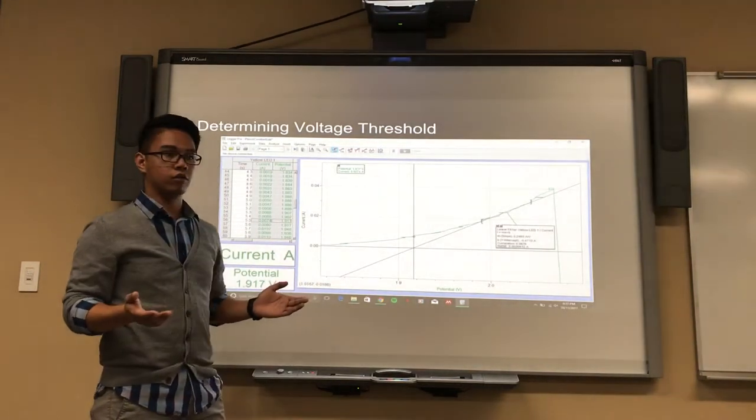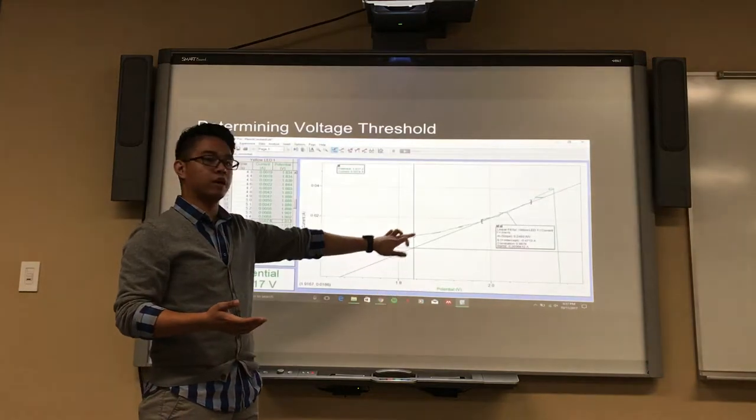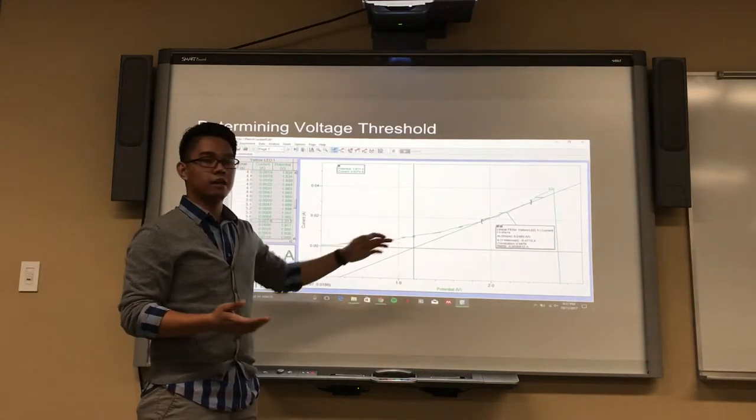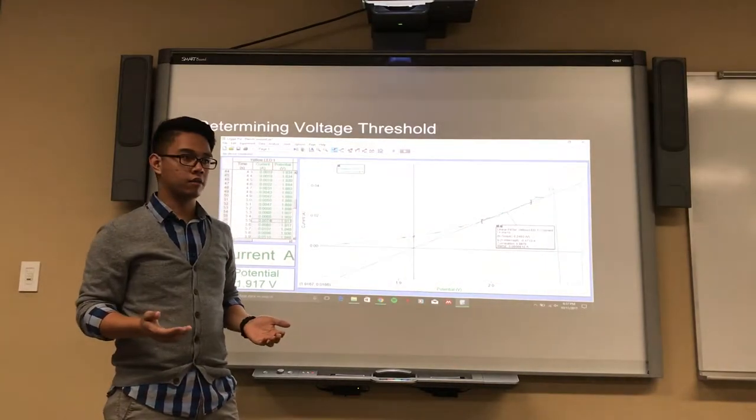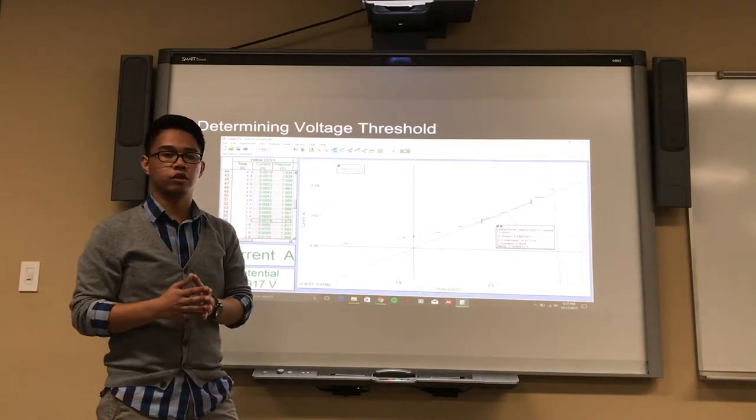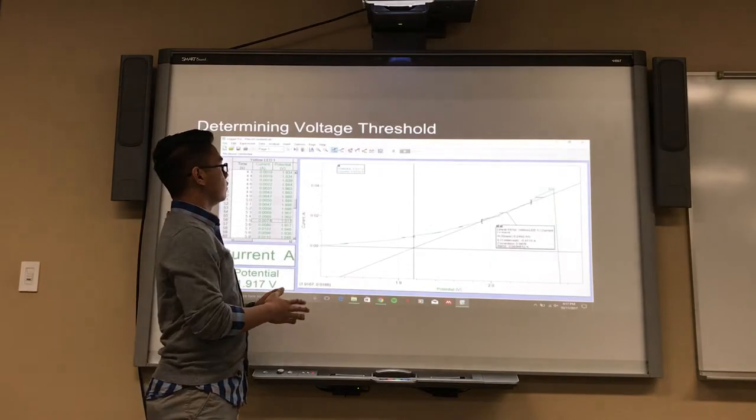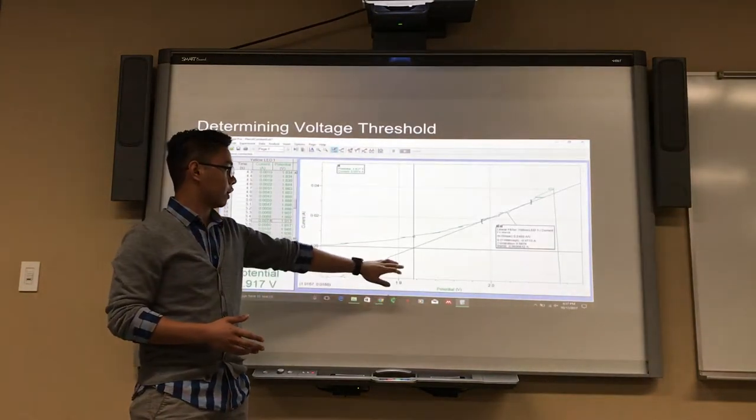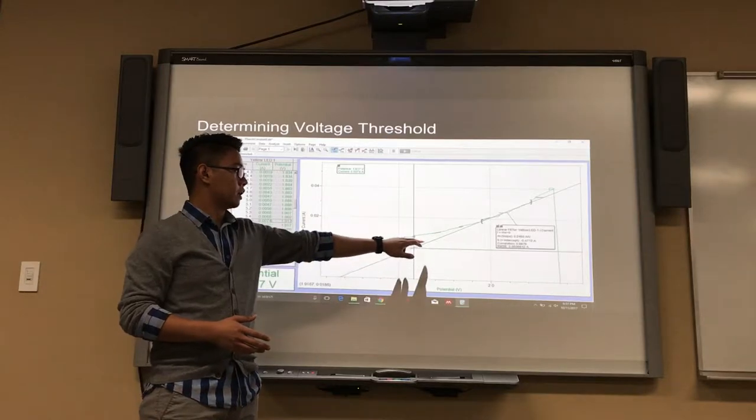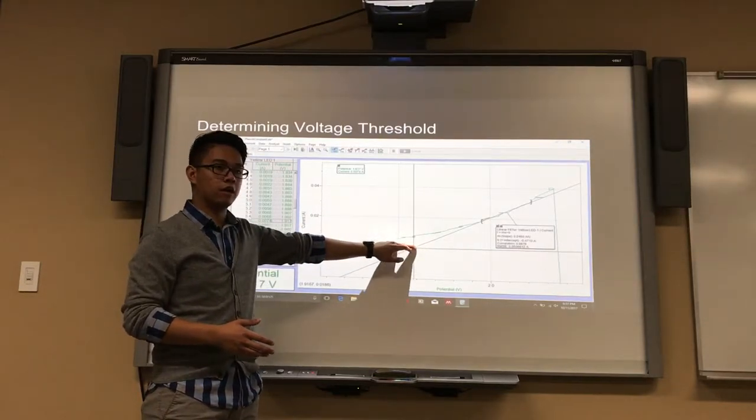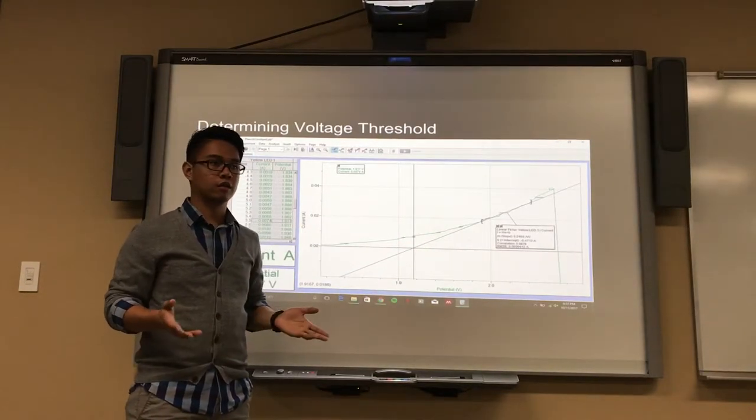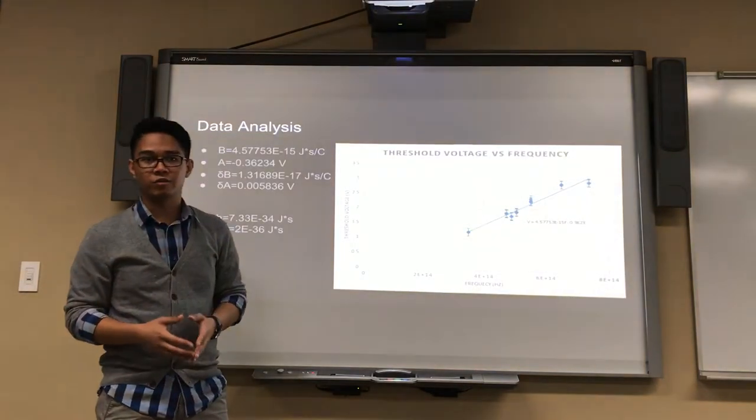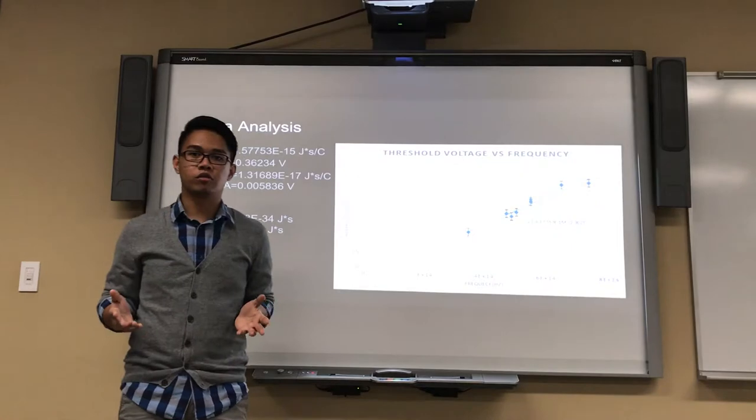At this point what we can also assume is that where the line of best fit crosses over the voltage potential axis is where the voltage threshold is. From there we can use the examine function on LoggerPro to find where the intersection of the line of best fit is with the voltage potential axis. This is where we got our voltage threshold and Will will now explain how we use this voltage threshold data.